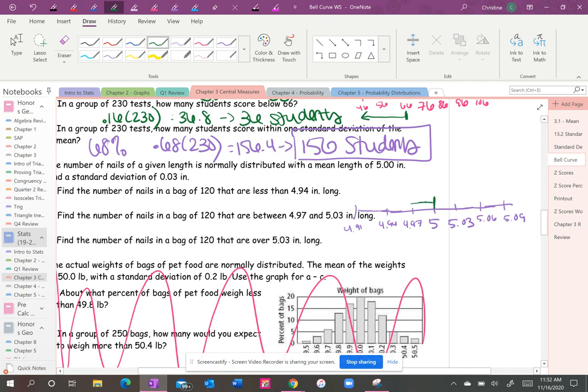All right, find the number of nails in a bag that are less than 4.94. So again I'm just going to split this up: 34, 34, 13.5, 13.5, 2, 2, 0.5, 0.5. All right, less than 4.94, that's 2.5. So 0.025 of 120 is 3.